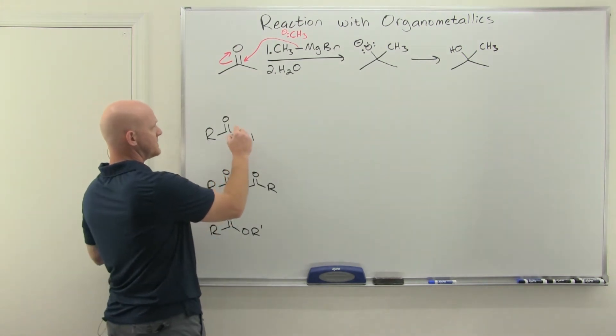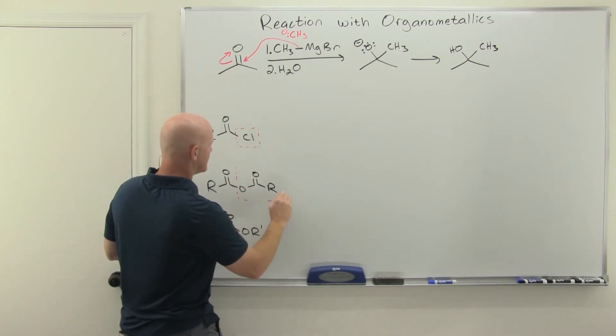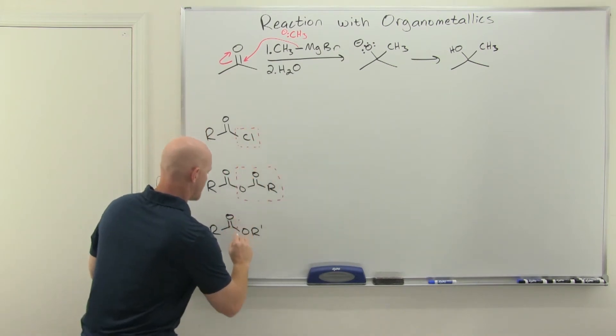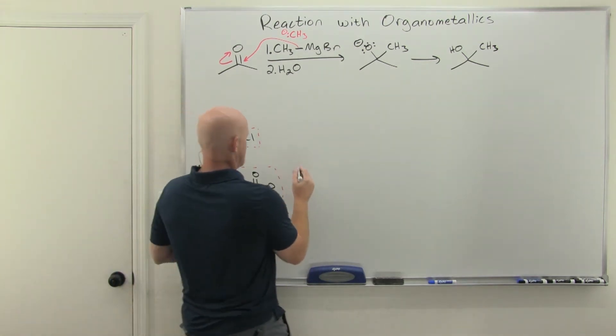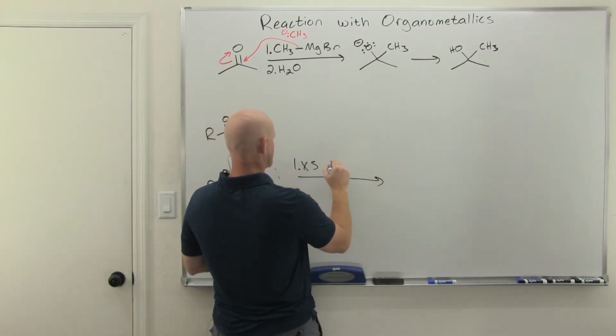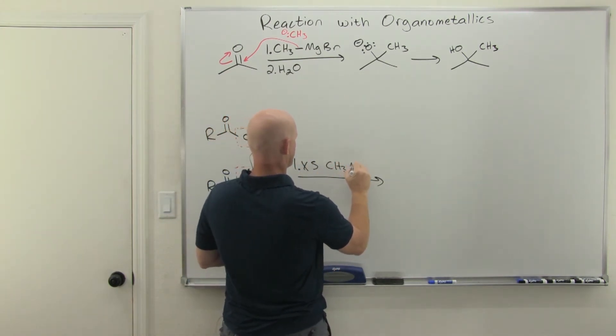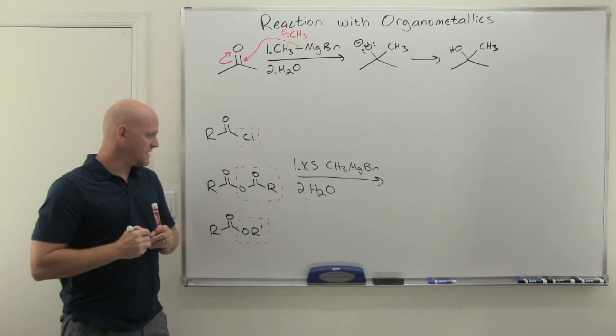So if we look, the only difference here is really we've just got different leaving groups. We've got a chlorine leaving group here, we've got a carboxylate leaving group for the anhydride, and then we've got an alkoxide leaving group for the ester. But in every one of these cases, we're going to add excess Grignard, and I'll use a methyl Grignard again, make it analogous, and then we'll finish this off with an acid workup again.